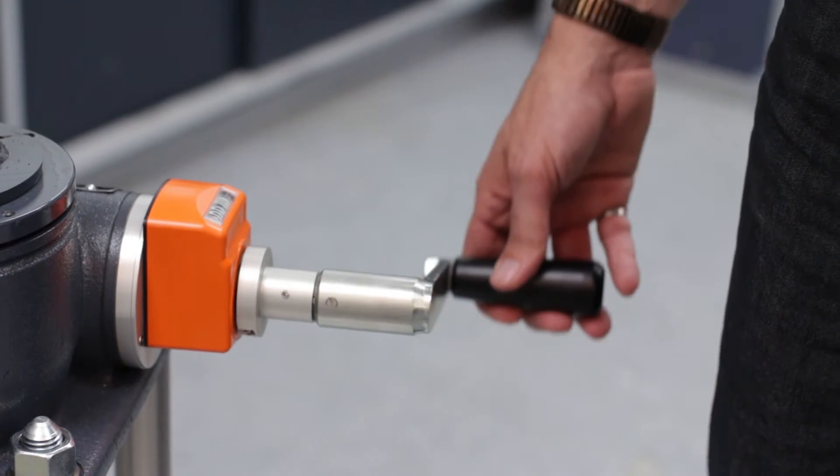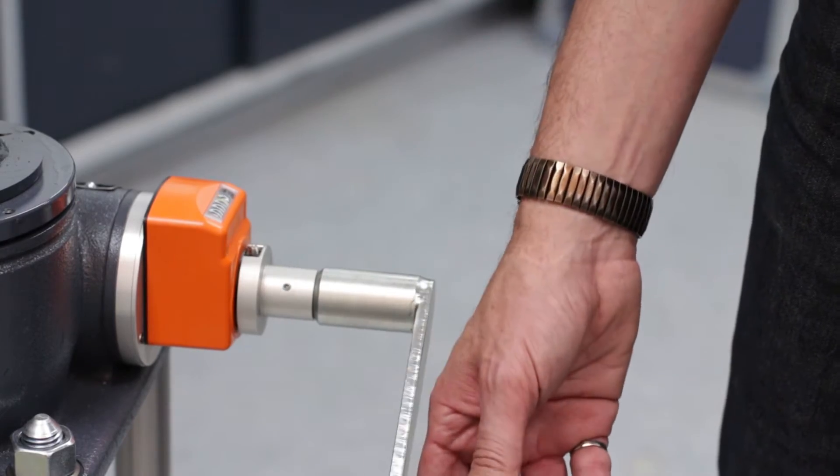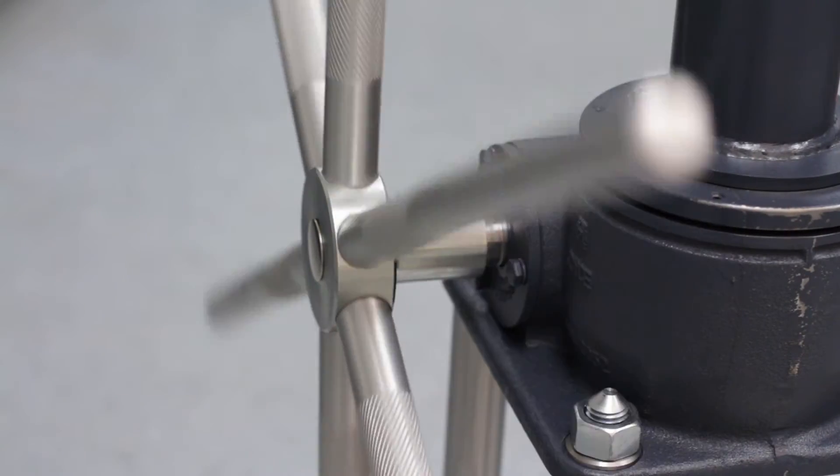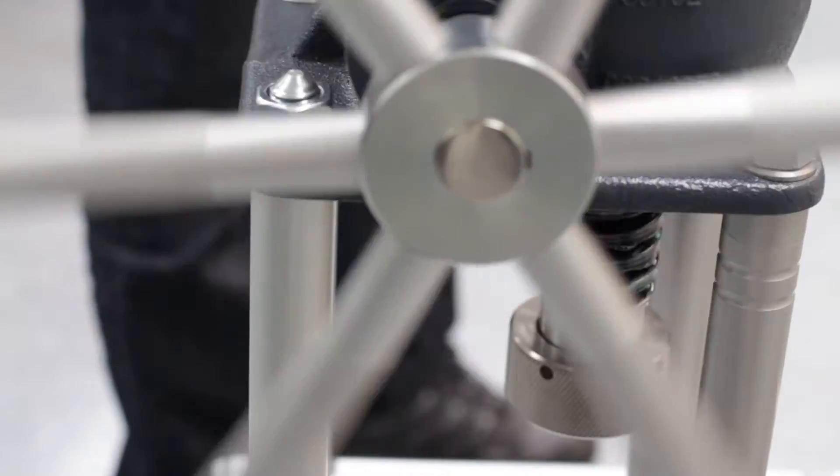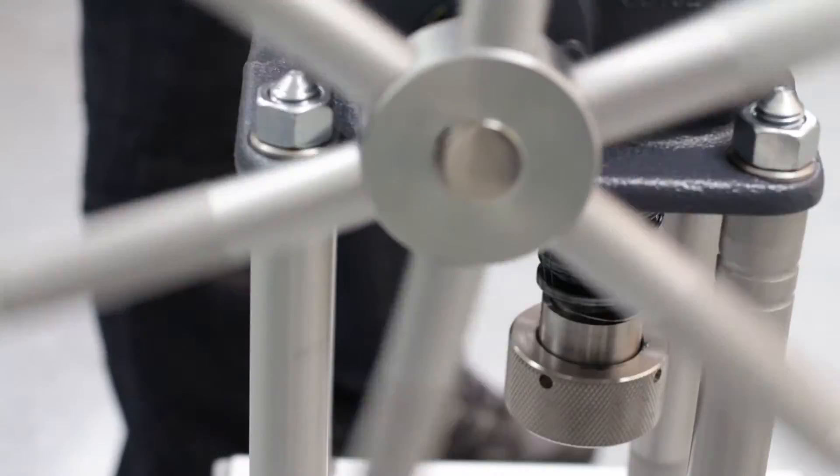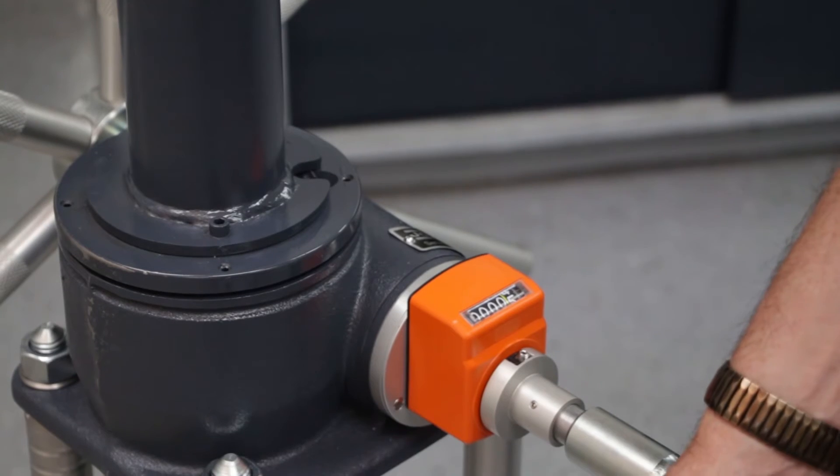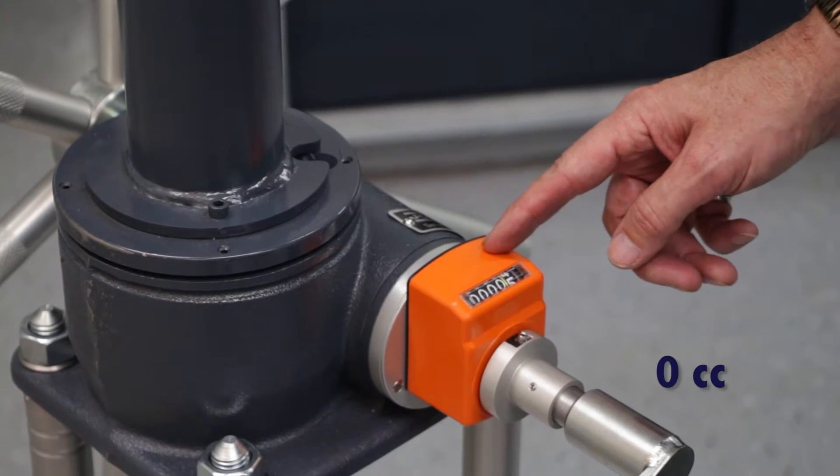Turn the crank counterclockwise to lower the piston. Aim for one rotation per second. While the piston is lowering, water will be pumped inside the cylinder from the tubing connected to port number four. When the counter reaches zero cc, stop turning because the piston has traveled to its lowest position.